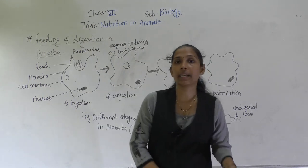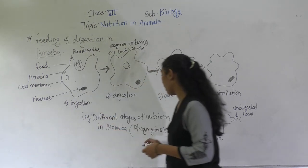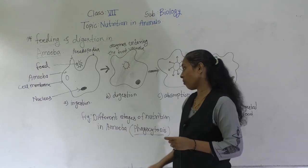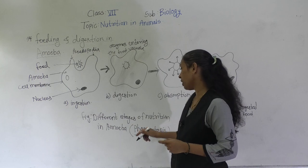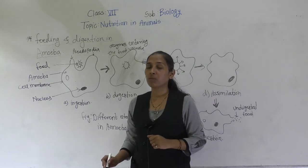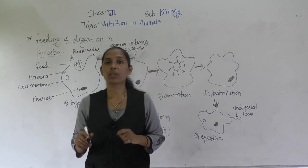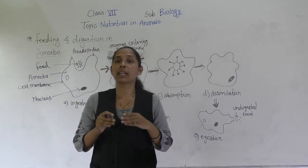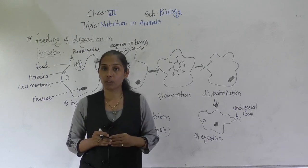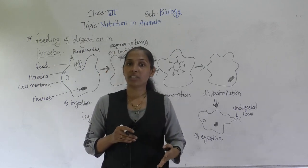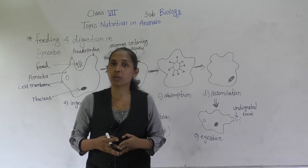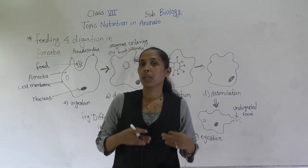The feeding process, or the feeding and digestion in amoeba, is also called phagocytosis. In this point, we are going to discuss how animals like amoeba, which is unicellular, obtain their food and how it gets digested.